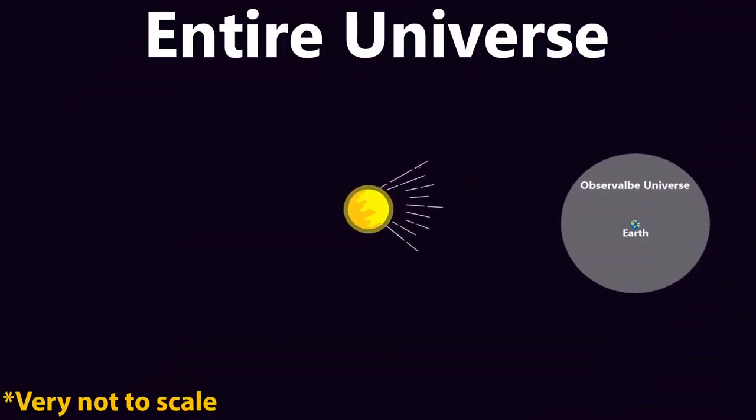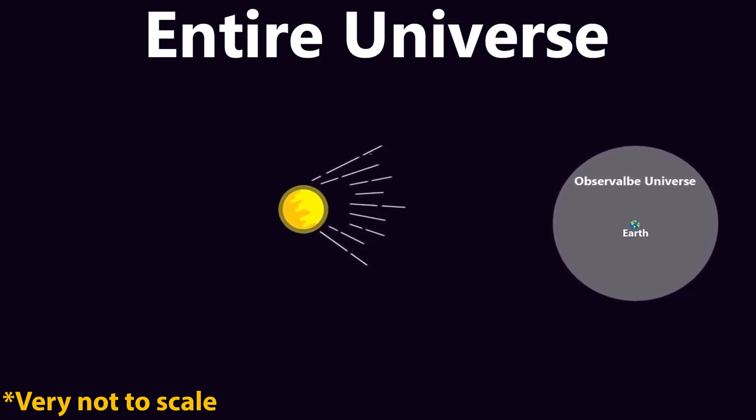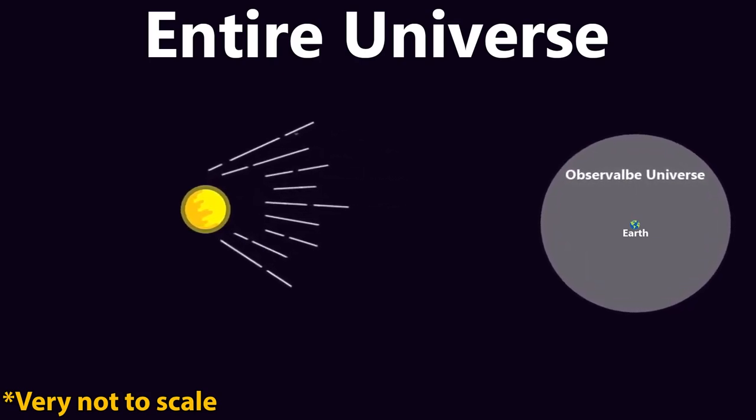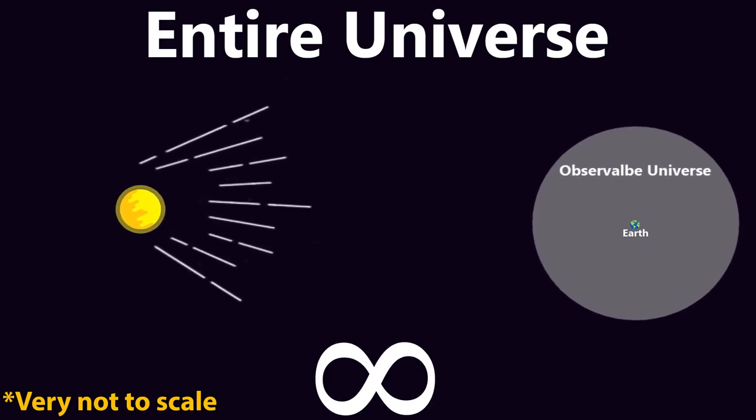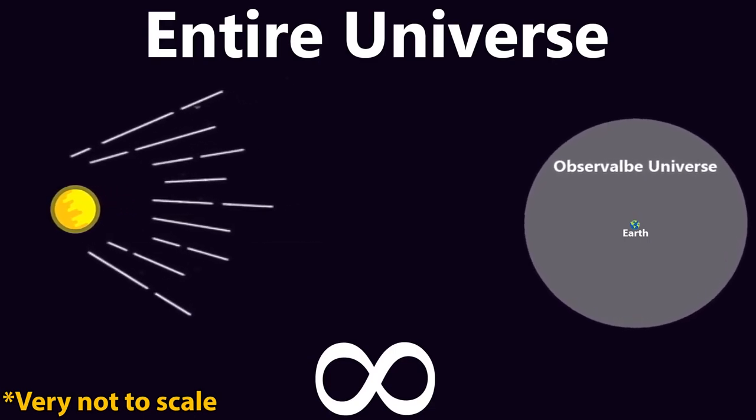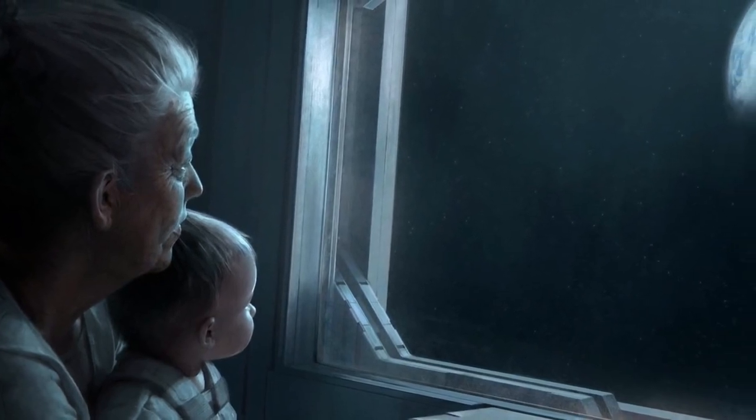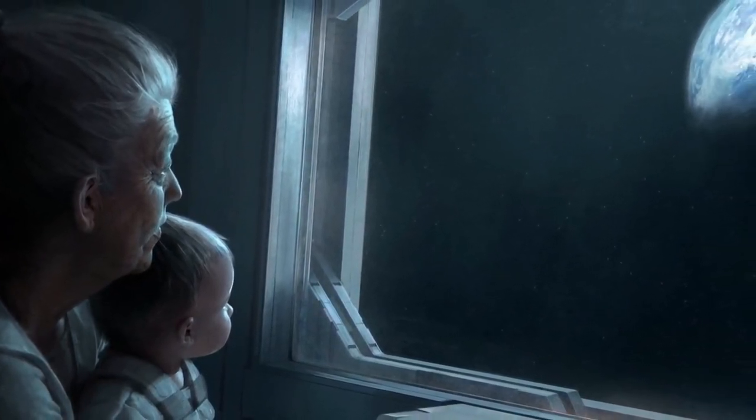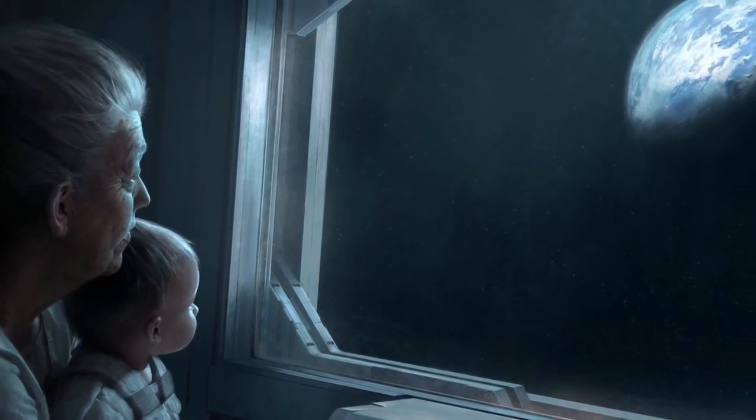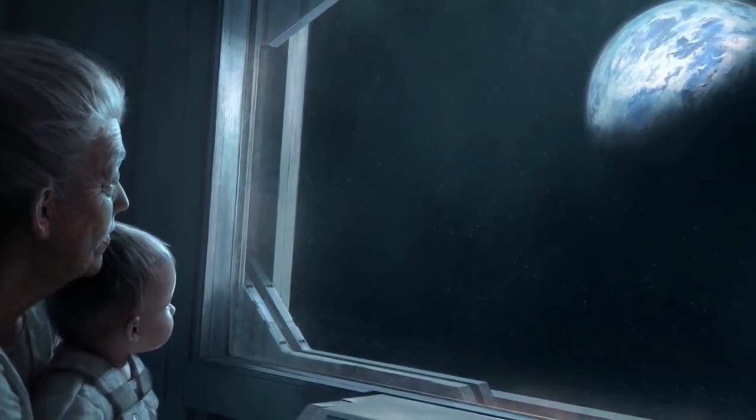Because some parts of space very far away from Earth are expanding away from us faster than the speed of light, that means that the light from these places will never, in an infinite amount of time, reach Earth. Meaning that even if humanity is eternal and exists forever, there will still be an unknown number of places in the universe that we will never know about or ever see.